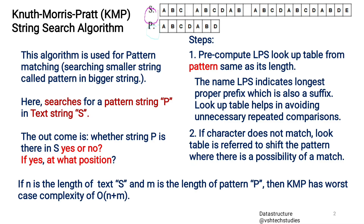It carries 8 marks. The Knuth-Morris-Pratt or KMP algorithm is a string search algorithm used for pattern matching — searching for a smaller string in a bigger text string. Here the bigger string S is 'ABC ABCDAB ABCDABDE', and the pattern P to be searched is 'ABCDABD'. The outcome will be whether pattern P is present in S, and if so, at what position.